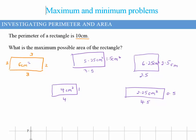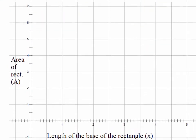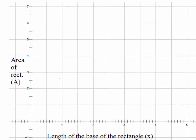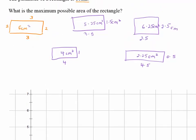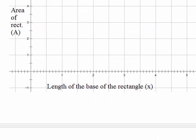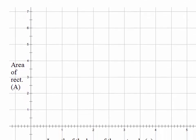Once I've got that information, I'm going to translate it onto a graph. I'm graphing the length of the base of the rectangle against the area of the rectangle. The scale goes from 0 to 5. My first rectangle has a length of 2 or 3 — it doesn't matter which — and an area of 6 centimeters squared.